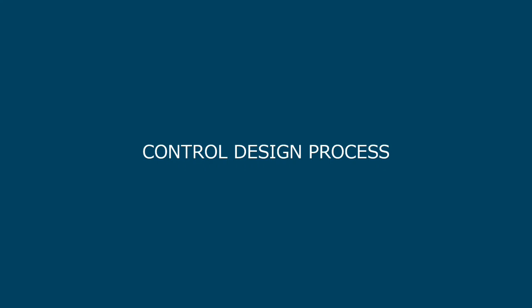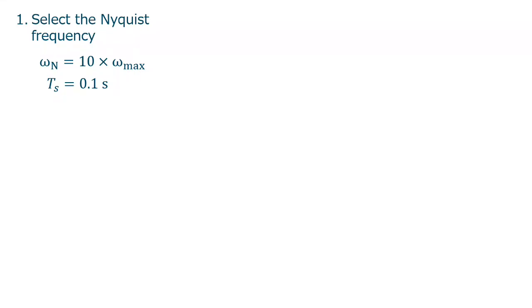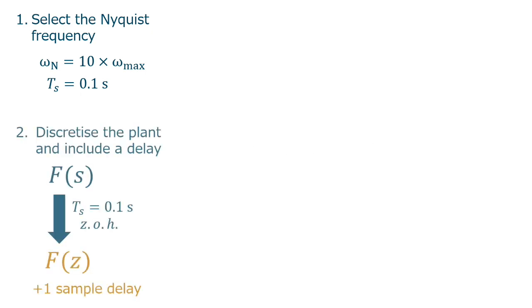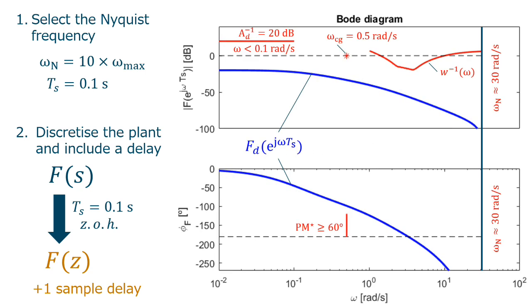And now the design process itself. So we start by selecting the Nyquist frequency by 10 times the maximum frequency, which derives in a 0.1 second for the sampling period. We discretize the plant using the sampling period and the ZOH method. And we will include one sample delay following the approach that we have been seeing in the lab. And this is the result. So we have here the specification for the attenuation. So we should go above this line. We should cross the 0 dBs at this point with the adequate phase margin. And the open loop gain should go below the inverse of W.